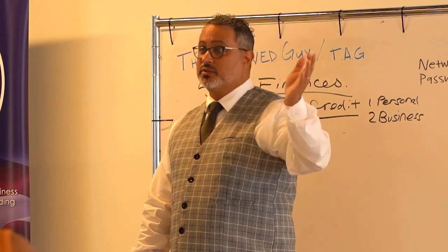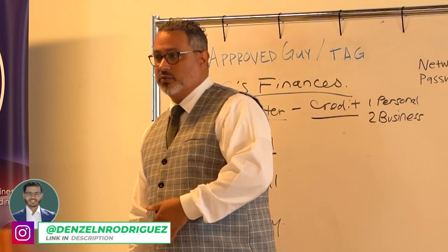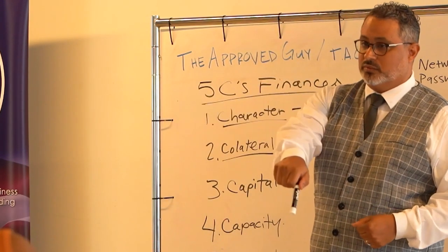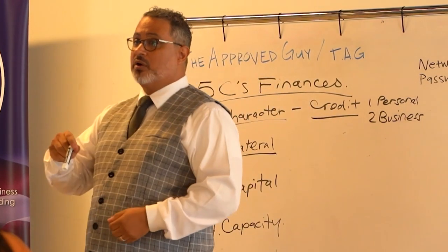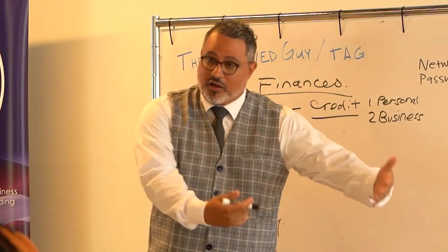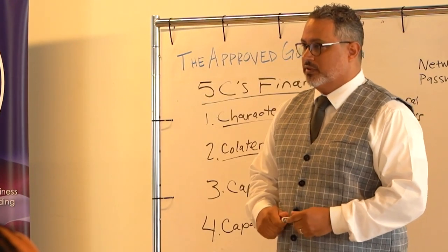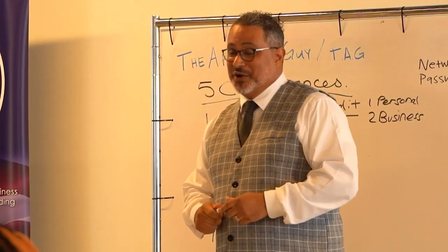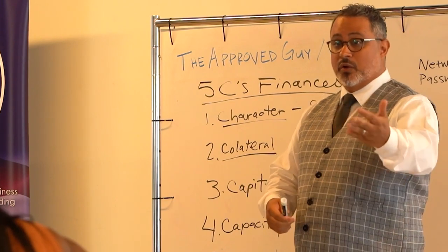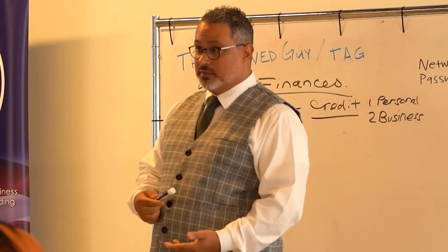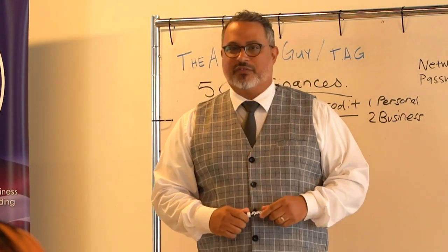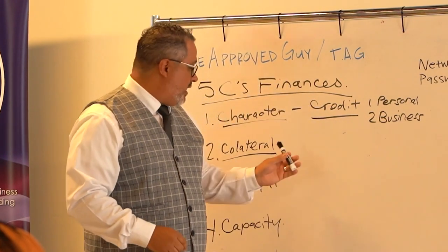Some SBA banks require collateral and some don't. If you don't have collateral, you can bring an equity partner to the loan. An equity partner does not have to be a partner or member in your business — it could be a third party willing to offer their equity to collateralize the loan for you. It could be a friend, family member, or business associate willing to offer their equity so you can qualify for that SBA loan.